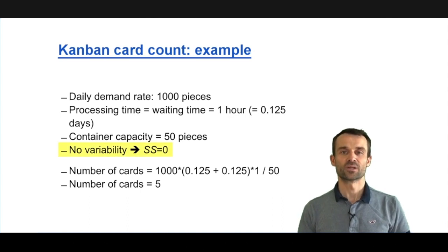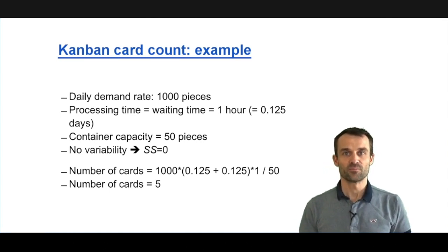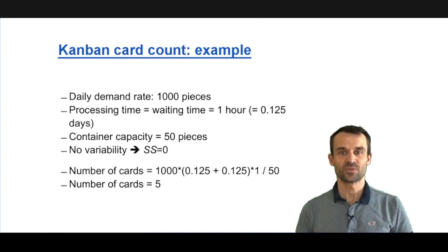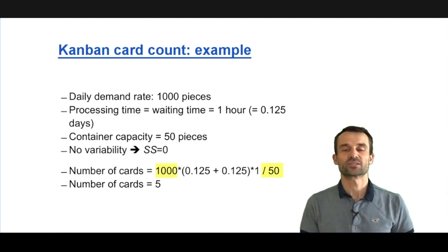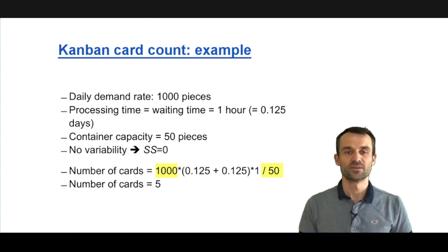The number of Kanban cards we need is flow time multiplied with flow rate, as in Little's Law, giving us the desired WIP. Flow rate is 1000 units per day, but we have 50 units per Kanban card (our container quantity), so 1000 divided by 50 is 20 Kanban cards per day, our flow rate.